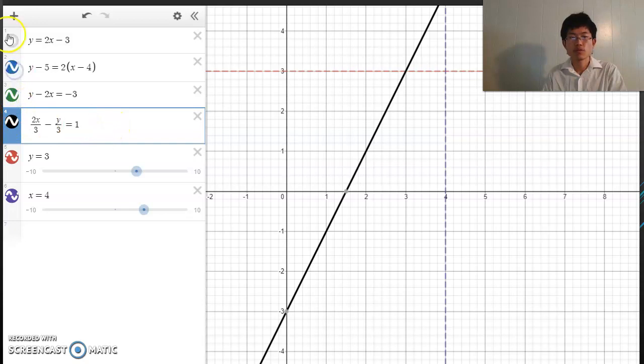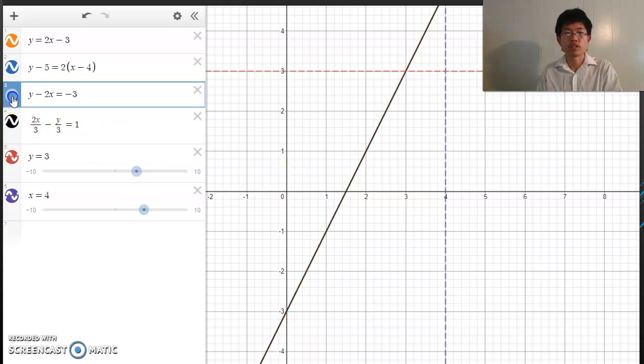And all these four lines are in the same place because they're the same equation. They're just written in different ways.